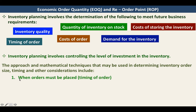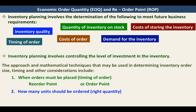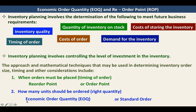First, when orders must be placed — the timing of order, when are we going to order. In this, we are going to study the reorder point, also called order point. The next question would be how many units should be ordered — the right quantity. In this, we are going to use the economic order quantity in determining the right quantity to order. Economic order quantity can also be called standard order.